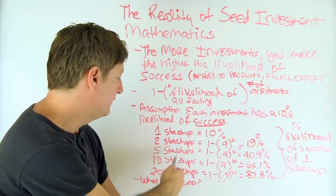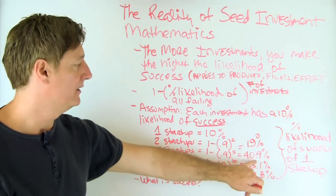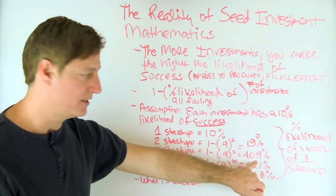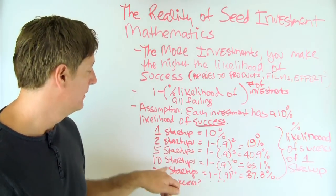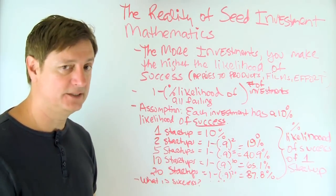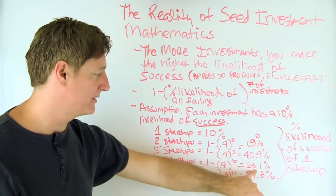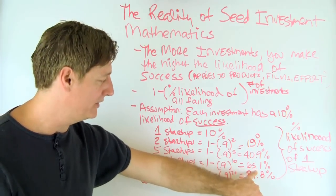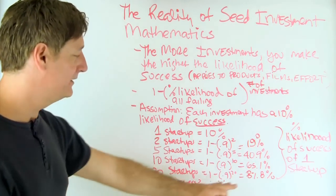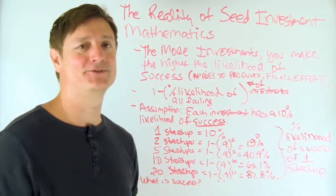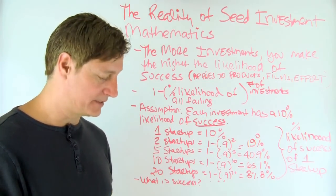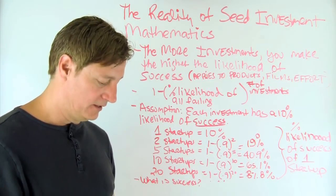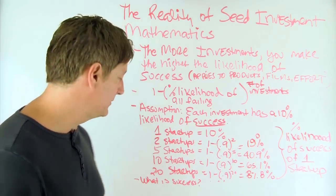And then if you go to five startups, now your chances of having at least one successful startup is 40%, 40.9%. Of course, if you invest into 10 startups, your chances substantially increase. And as you can tell, by the time you invested into 20 startups, you're going to have one of them, at least one of them, become successful. And this is where the seed mathematics do come into play.